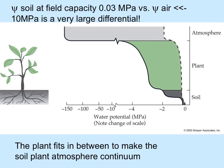Soil at field capacity — well hydrated, often measured in the early morning — has a water potential of about negative 0.03 megapascals, versus the much lower potential of the air. The plant fits in between, forming the soil-plant-atmosphere continuum. This graph shows the soil water potential close to zero or slightly negative; throughout the plant it gets more negative, and the atmosphere much more negative, on a logarithmic scale.